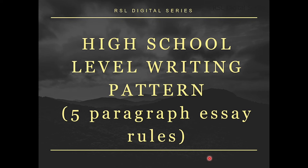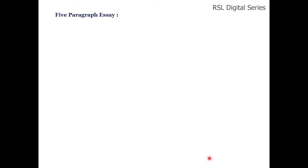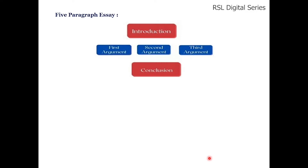First, we will see how to write using a high school level writing pattern. It generally comprises of a five-paragraph essay. As the name suggests, it consists of five paragraphs: one introduction and one conclusion. In between introduction and conclusion, we have three different paragraphs — the first argument, second argument, and third argument.